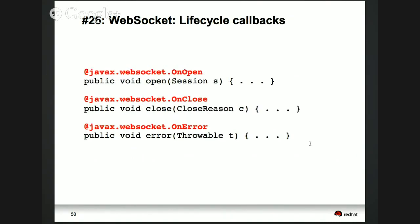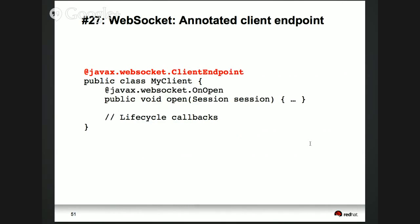Not just @OnMessage — you also have methods for when a connection is opened or closed or an error is thrown. Those are the WebSocket lifecycle callback methods. A client endpoint is defined using the @ClientEndpoint annotation. Once you have a client endpoint, you connect it to a WebSocket server using: get the WebSocket container, connect to the server, provide the client class instance, and the WebSocket URI where your endpoint is listening. WebSocket endpoints use the ws:// protocol, not http://.